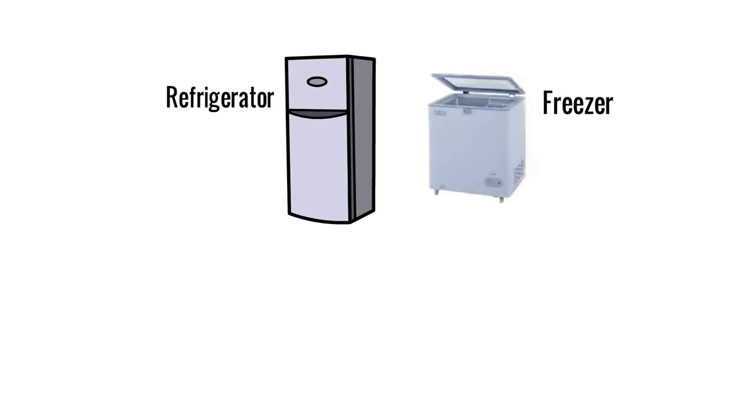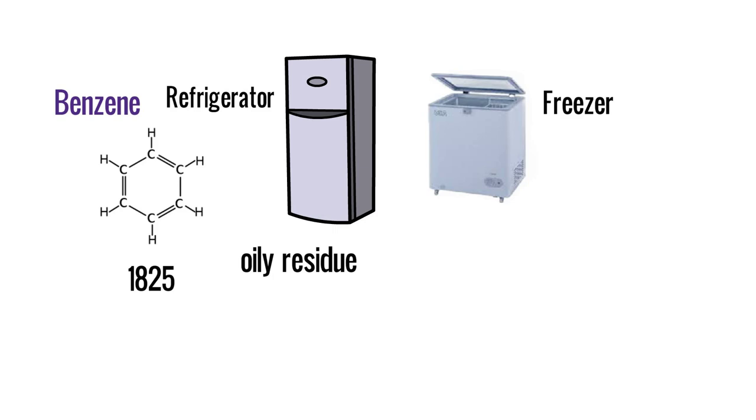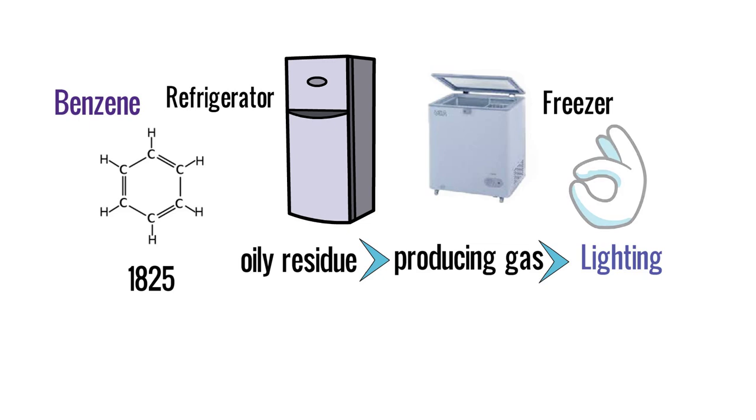Michael Faraday discovered benzene in 1825 from the oily residue left behind from producing gas for lighting in London. This was an enormously important discovery for the future of both science and technology.